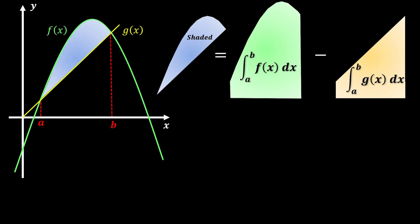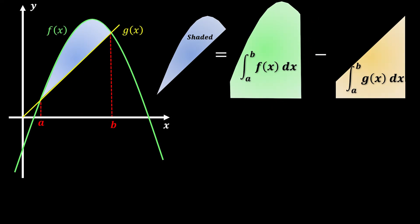To summarize: draw a line from the top function down to the axis. If something is blocking you, minus the area of the function that is blocking you. For this case, it's going to be the straight line.